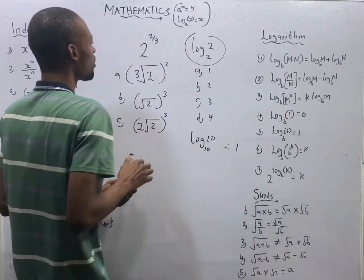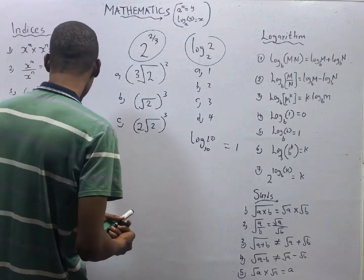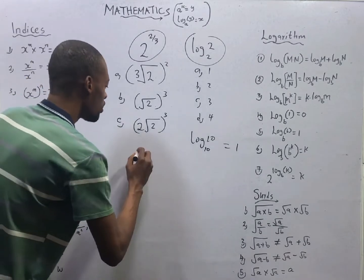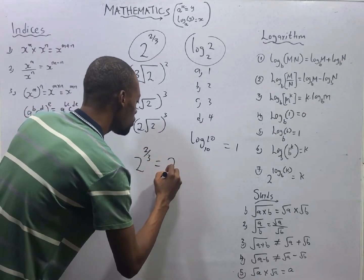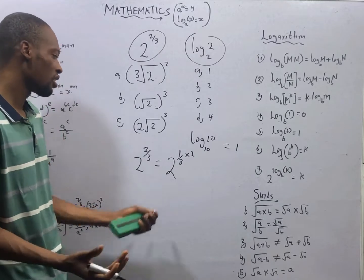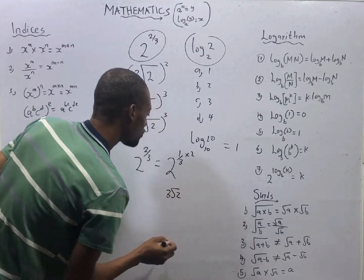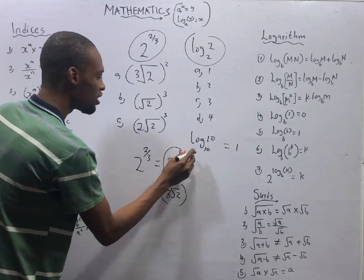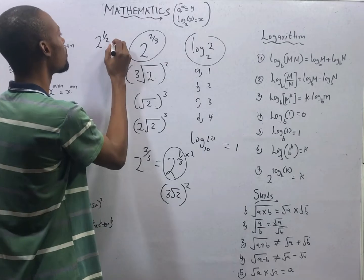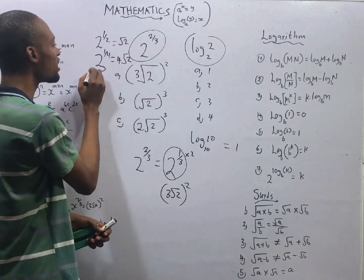From the laws of indices, if you have S raised to the power of 1/3, that is the same thing as the cube root of S. So, 2 raised to the power of 2/3 is the same as 2 raised to the power of (1/3 × 2), which means we have the cube root of 2, raised to the power of 2. Similarly, 2 raised to the power of 1/2 is the square root of 2, and 2 raised to the power of 1/4 is the fourth root of 2.